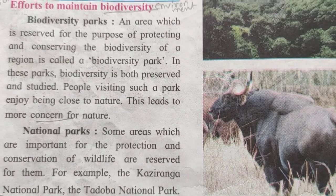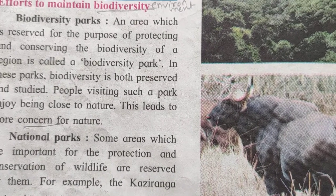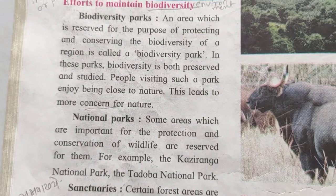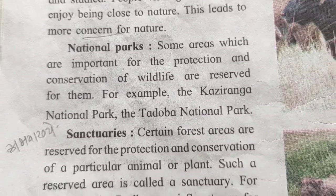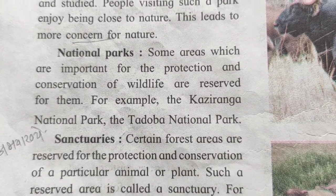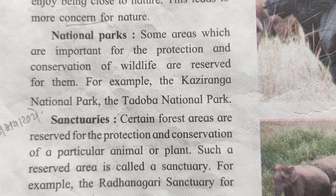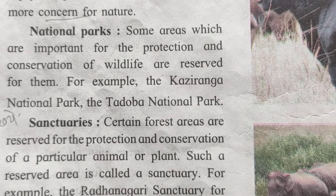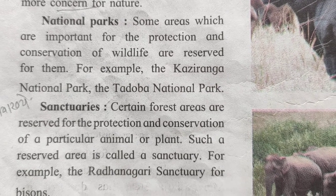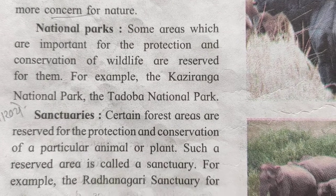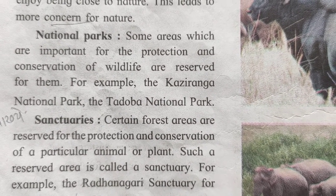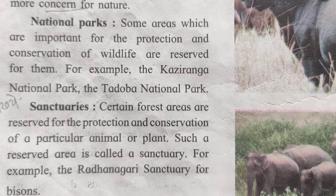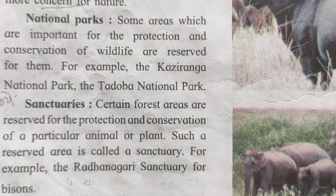The next point is national parks. At the national level, different governments create national parks. In national parks, many extinct animals create their habitat. Some areas of the jungle are protected or designated as national parks for animals. Examples include Boruli National Park, Kaziranga National Park, and Tadova National Park.